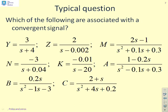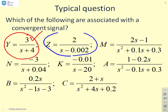Here's a typical question. Which of the following Laplace transforms are associated with a convergent signal? First, Y equals 3 over s plus 4. That one's easy. We're happy. What about Z? You'll notice in the denominator, I've got s minus 0.02, so that gives me a divergent signal. Next, look at M. There's a bit of a catch here.